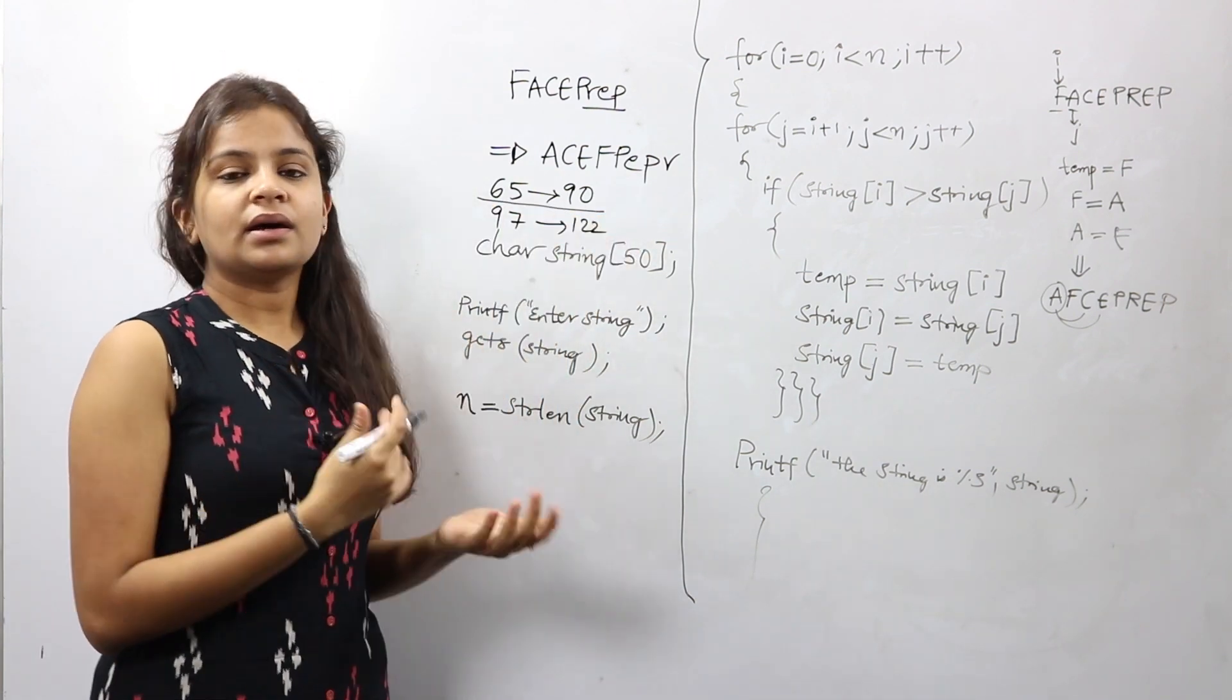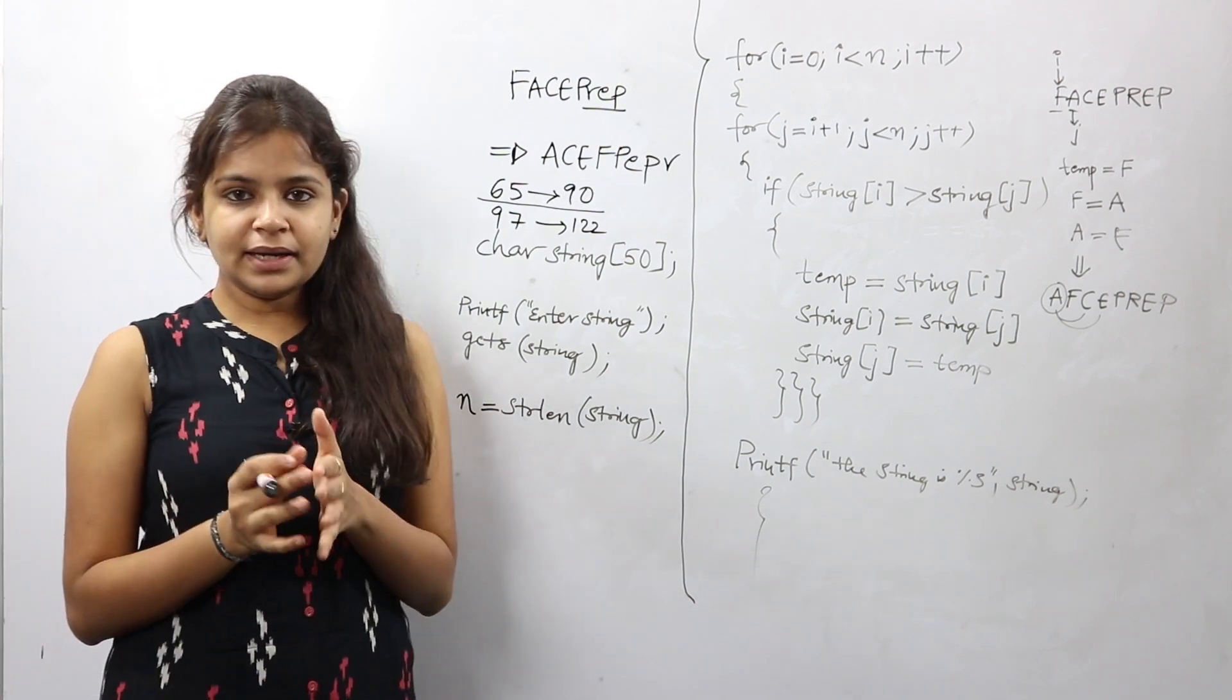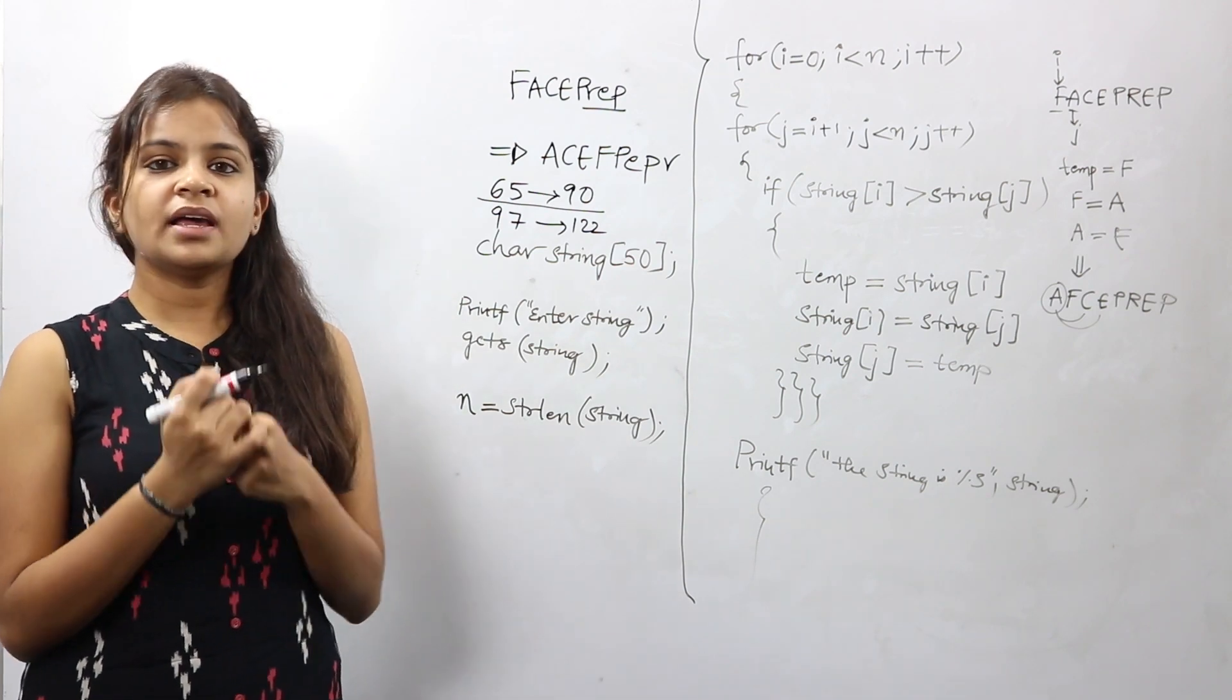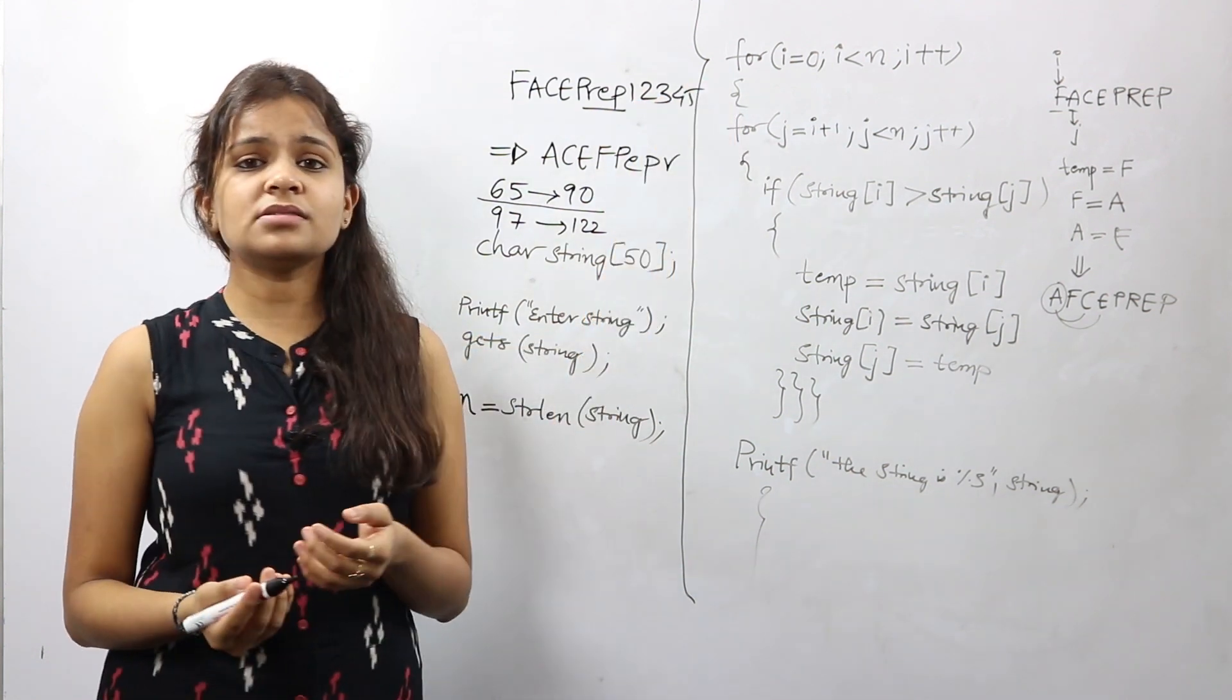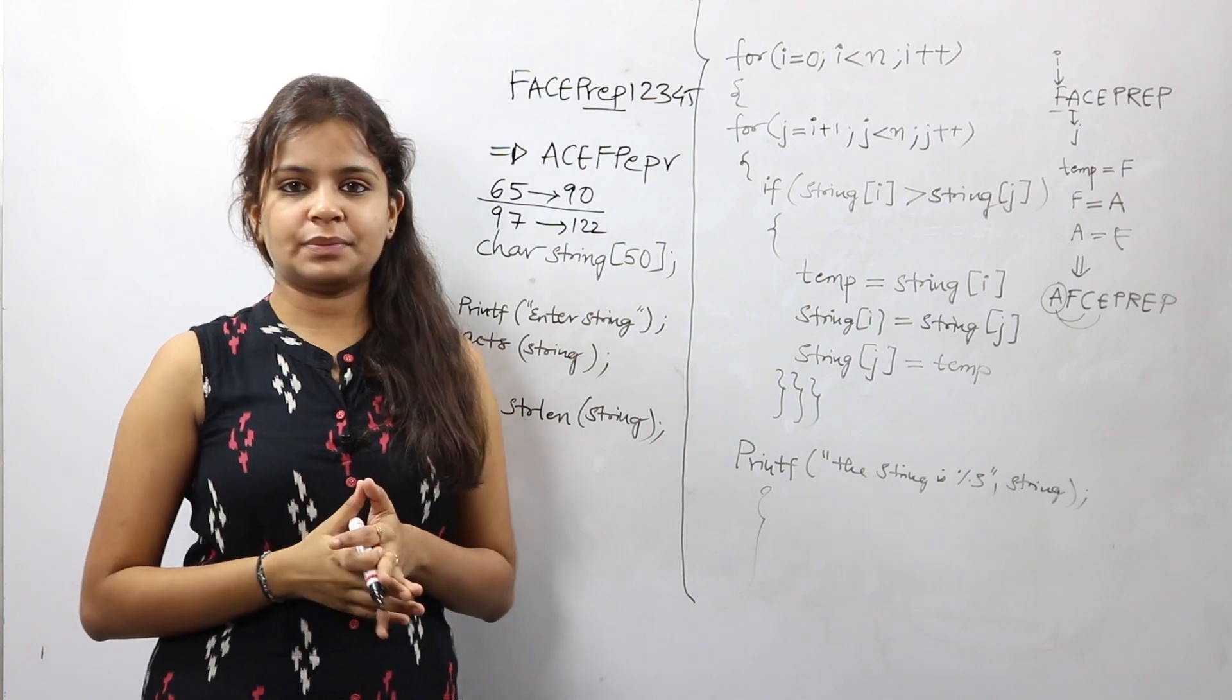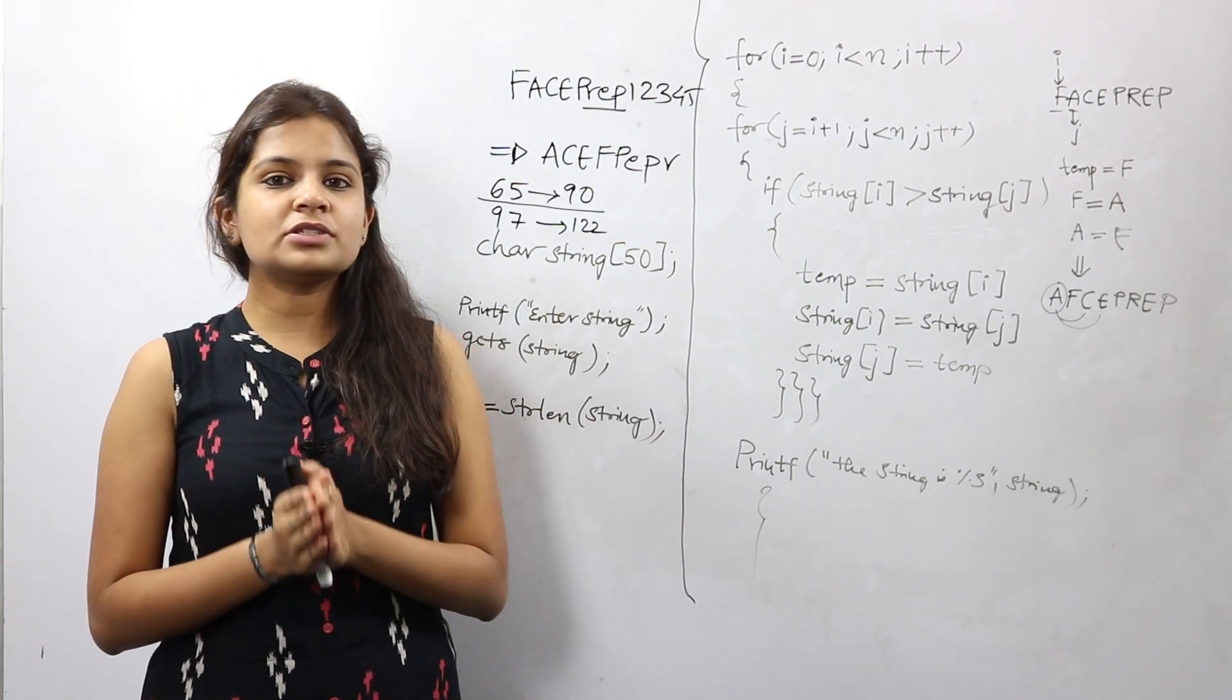Similarly, if your input has a mix of numbers and alphabets, like FACEPREP12345, always the numbers would get printed first followed by the alphabets. That's for this tutorial. In case you have any doubts please feel free to post it in the comment section and we will answer it for you.